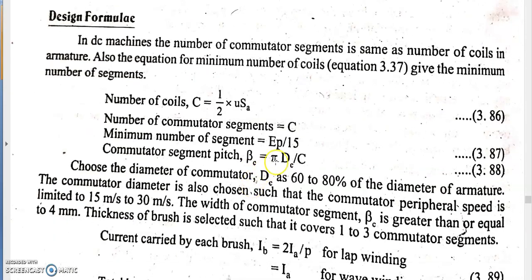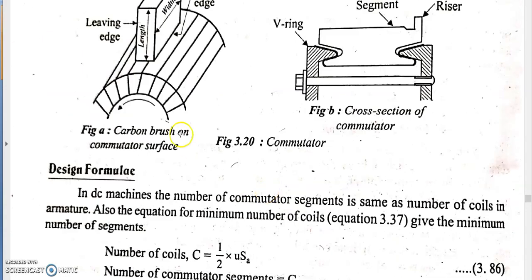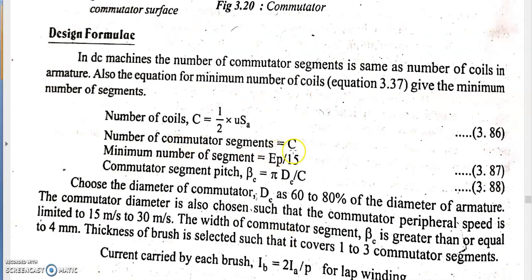The design formulas include the total number of commutator segments. The number of commutator segments is always equal to the number of coils in the machine. The number of coils is given by the equation: (1/2) × U × SA, where U is the coil sides per slot and SA is the number of armature slots. The number of armature slots has already been calculated in previous sections.